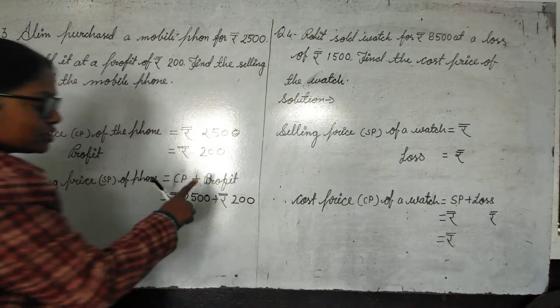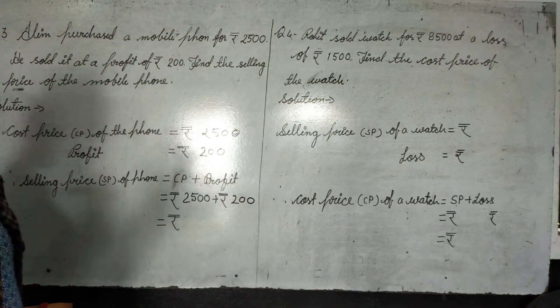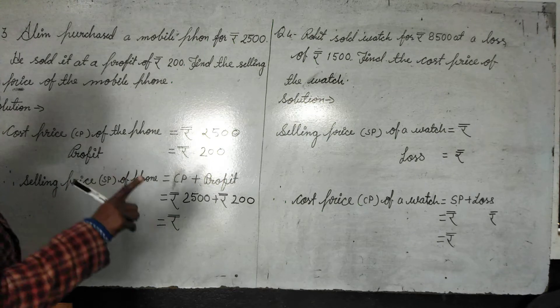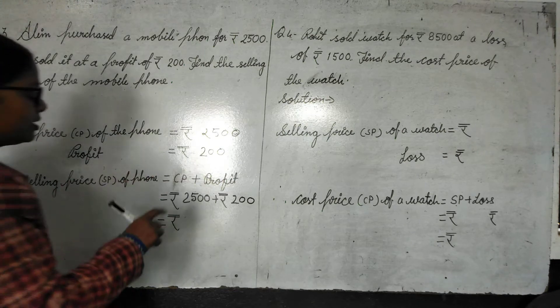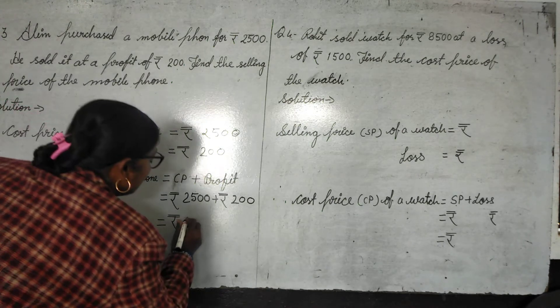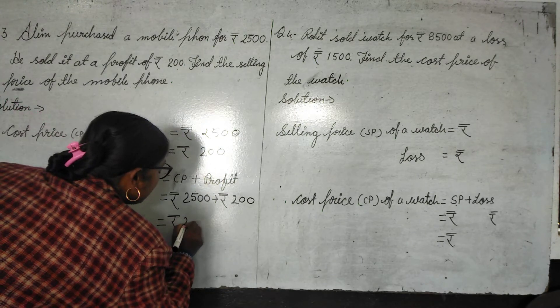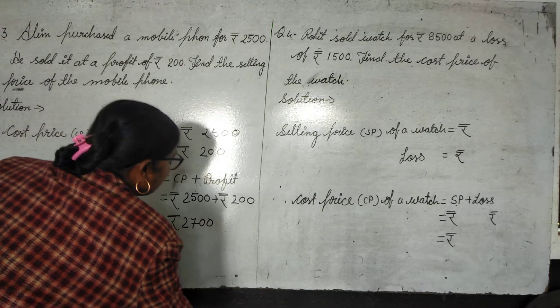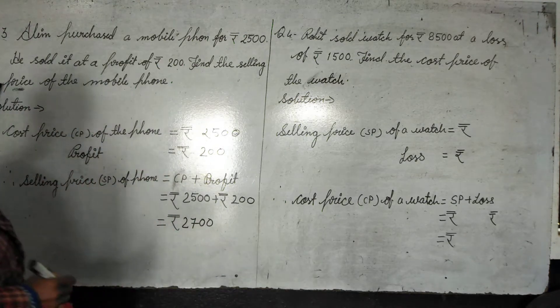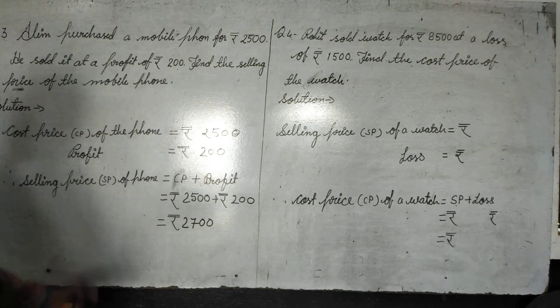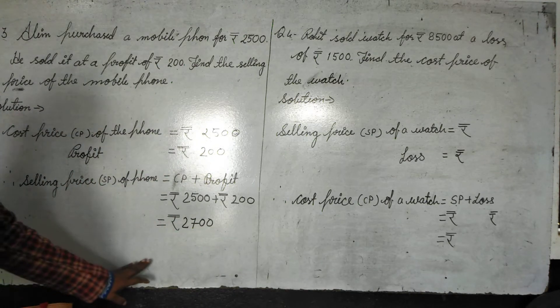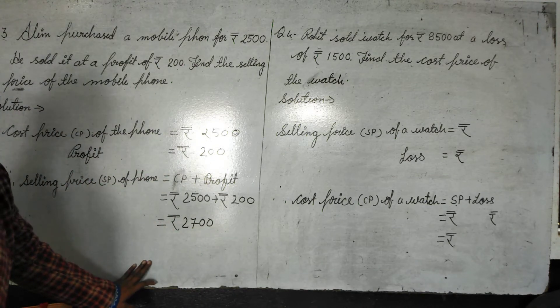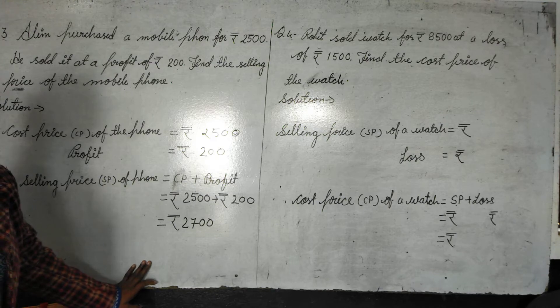So 2500 plus 200 is equal to 2700 rupees. So the selling price of the mobile is 2700 rupees.